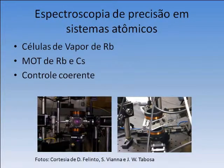As coisas que a gente pretende fazer com esse pente: espectroscopia de precisão em células de vapor de rubídeo, armadilha magneto-ótica de rubídeo e césio, e controle coerente. Essas são armadilhas magneto-óticas nos laboratórios do Daniel, Tabose e da Sandra.